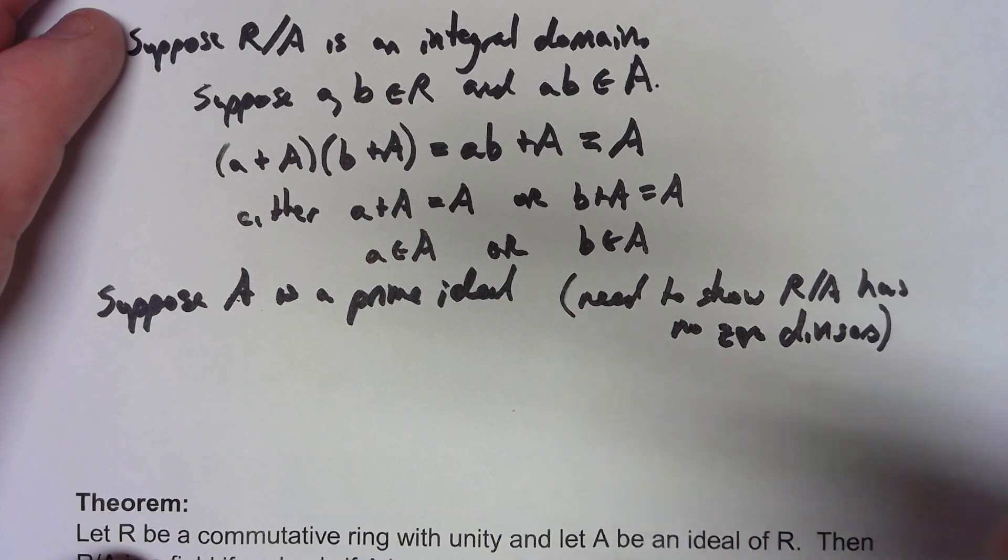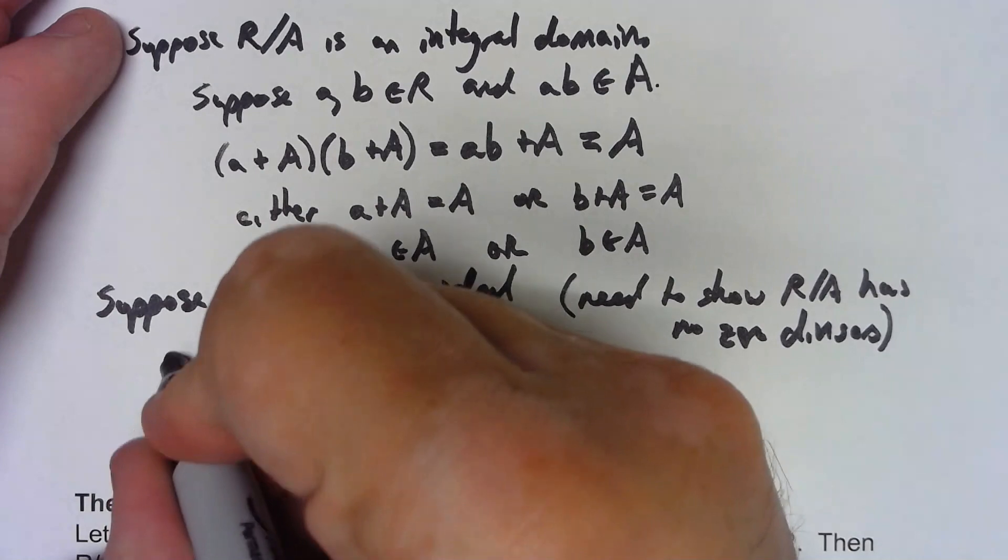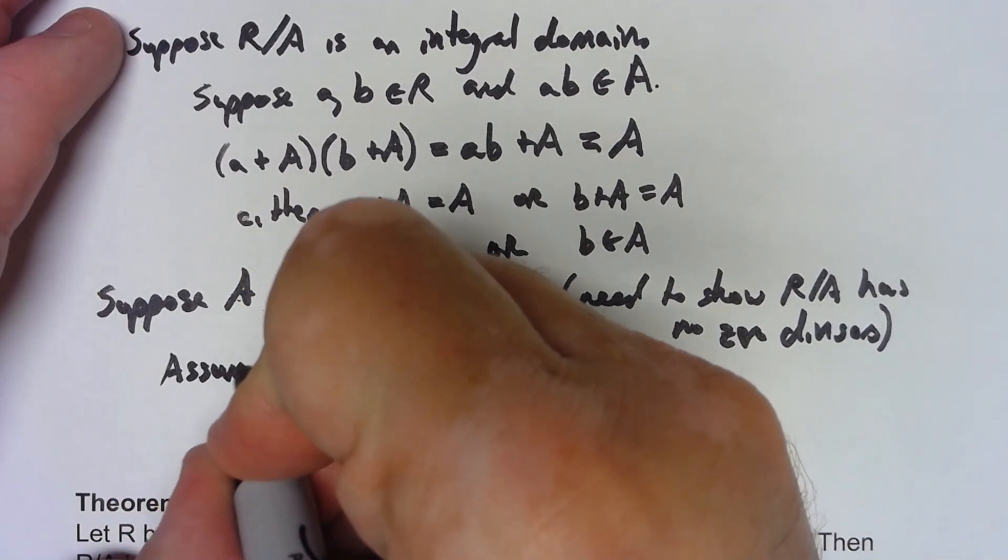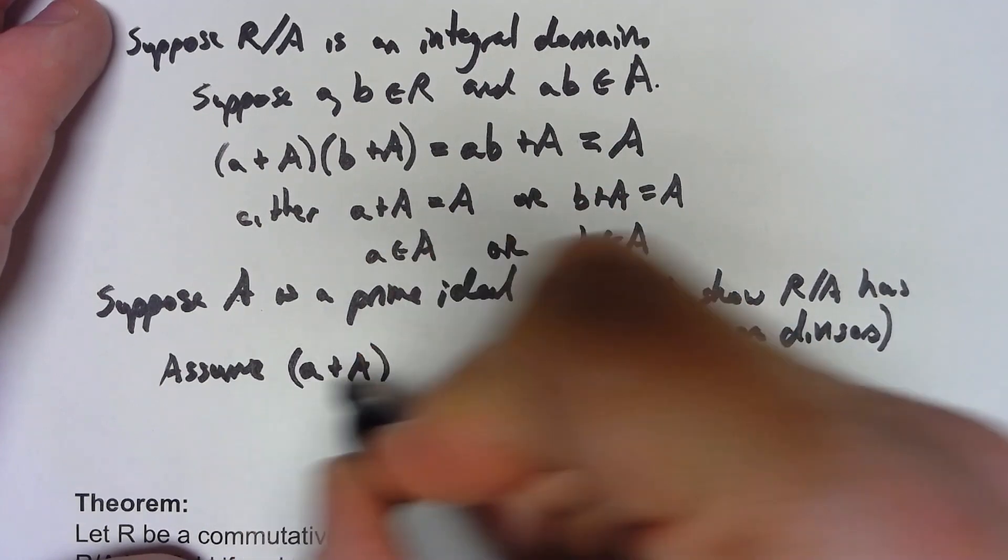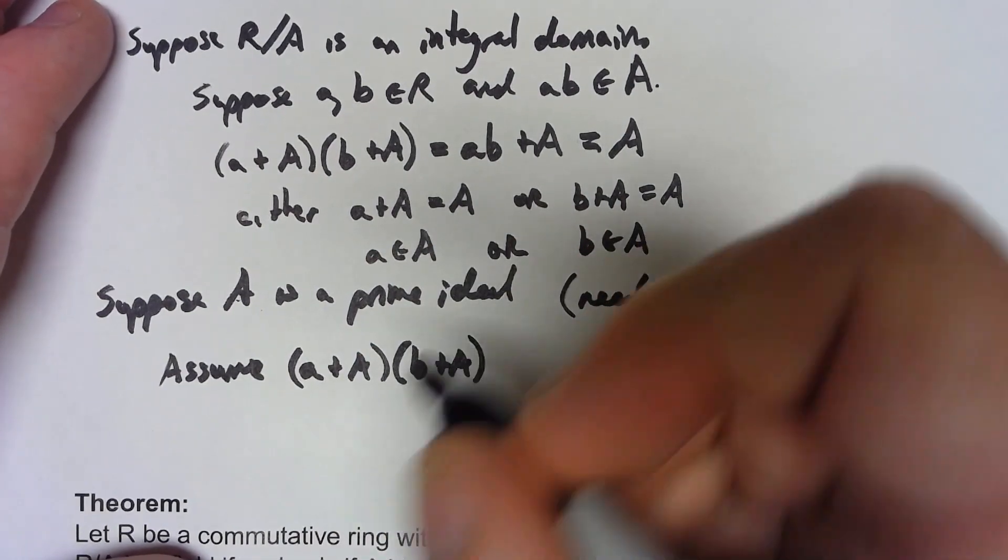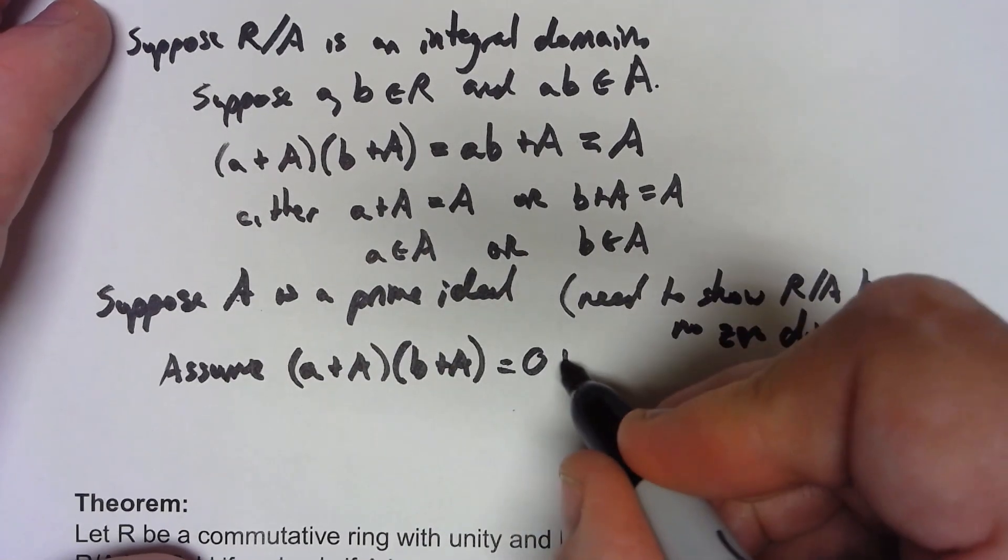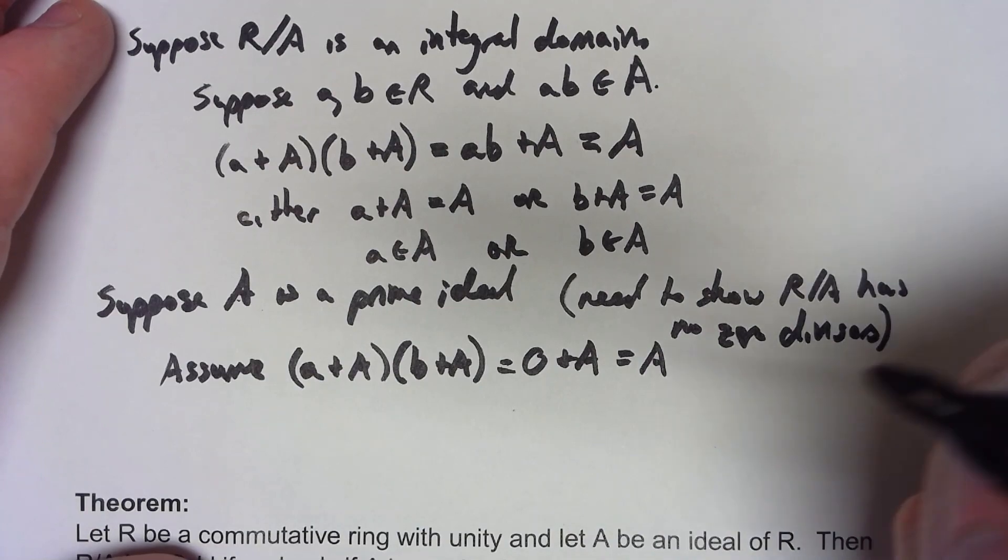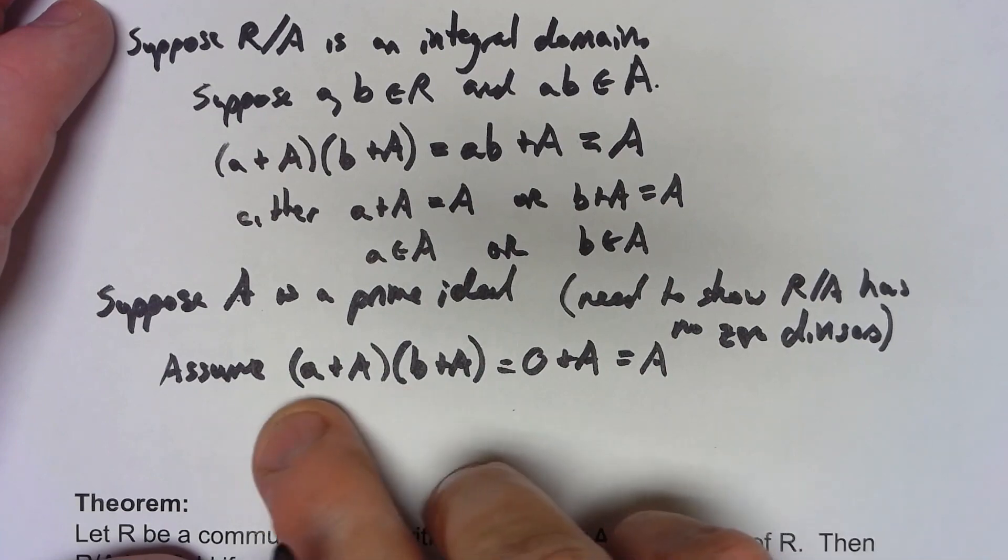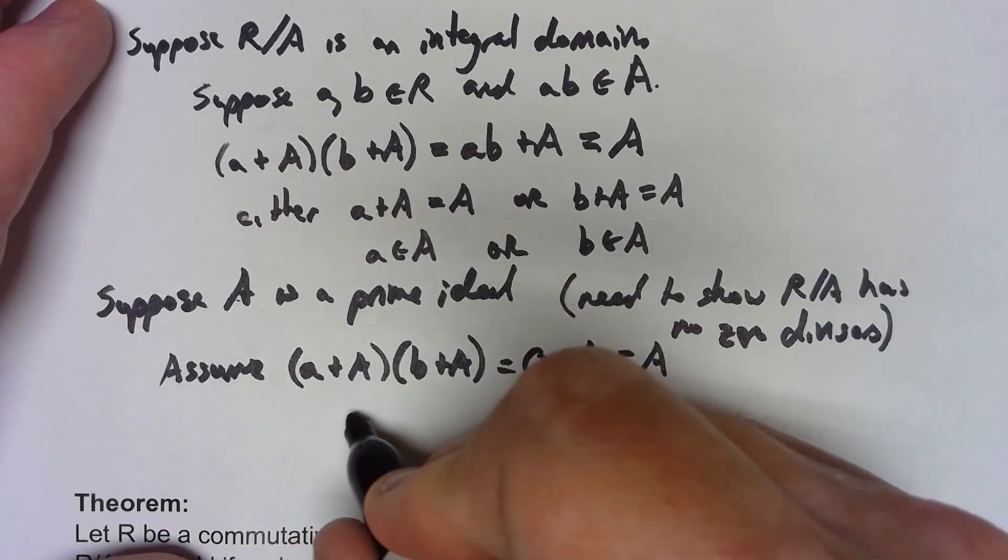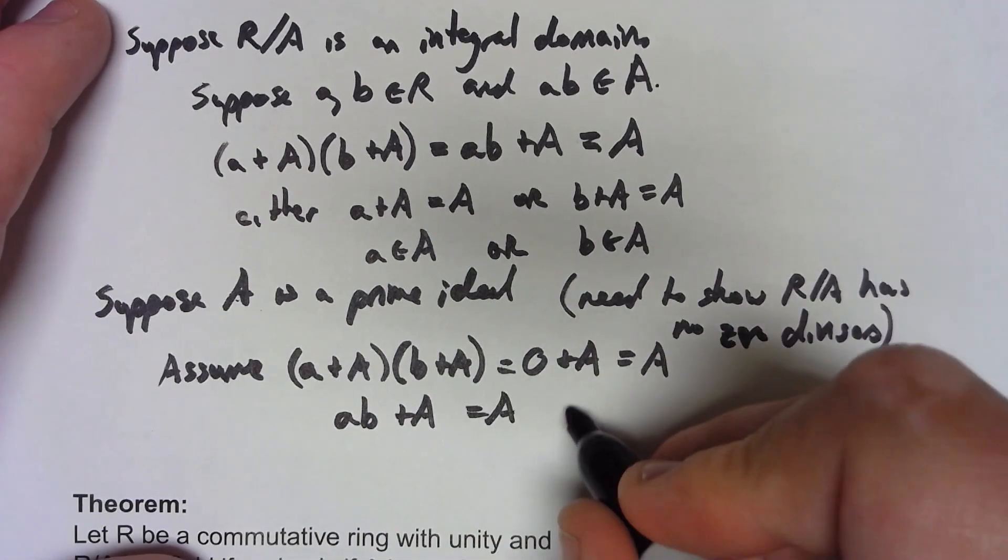So let's say I have two elements of my factor ring. I've got some a+A and some b+A, and I'm multiplying those together to get zero+A or just A. Again, it's basically the same kind of argument. ab+A is equal to A, so ab is an element of A.